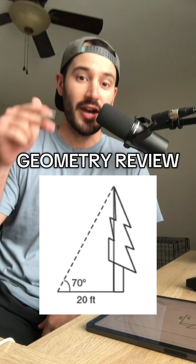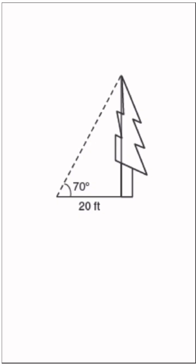If you're taking a geometry final, you have to know this. We are given a right triangle with an angle measure of 70 degrees and one side of 20 feet, and we want to know what is the height of this tree.